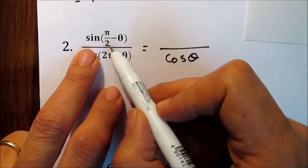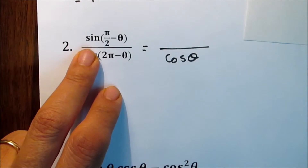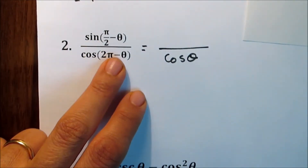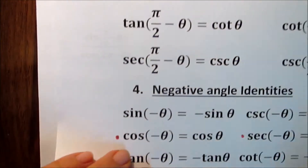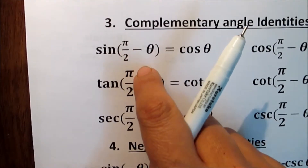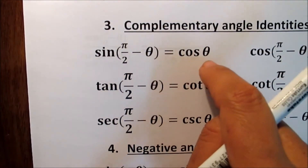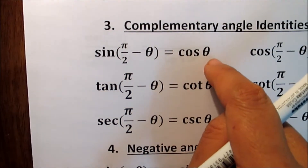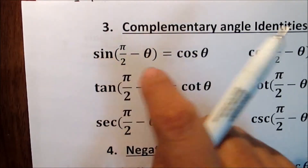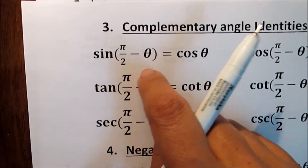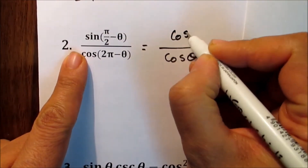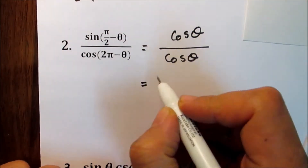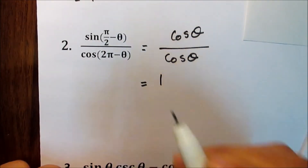For the top: sine of pi over 2 minus theta. If it's pi over 2 minus theta, recall the complementary angle identities. Sine of pi over 2 minus theta equals cosine theta — if it doesn't have 'co', you just put 'co' and remove the pi over 2 to get cosine theta. So up it's cosine theta and down it's cosine theta, simplified it equals 1.